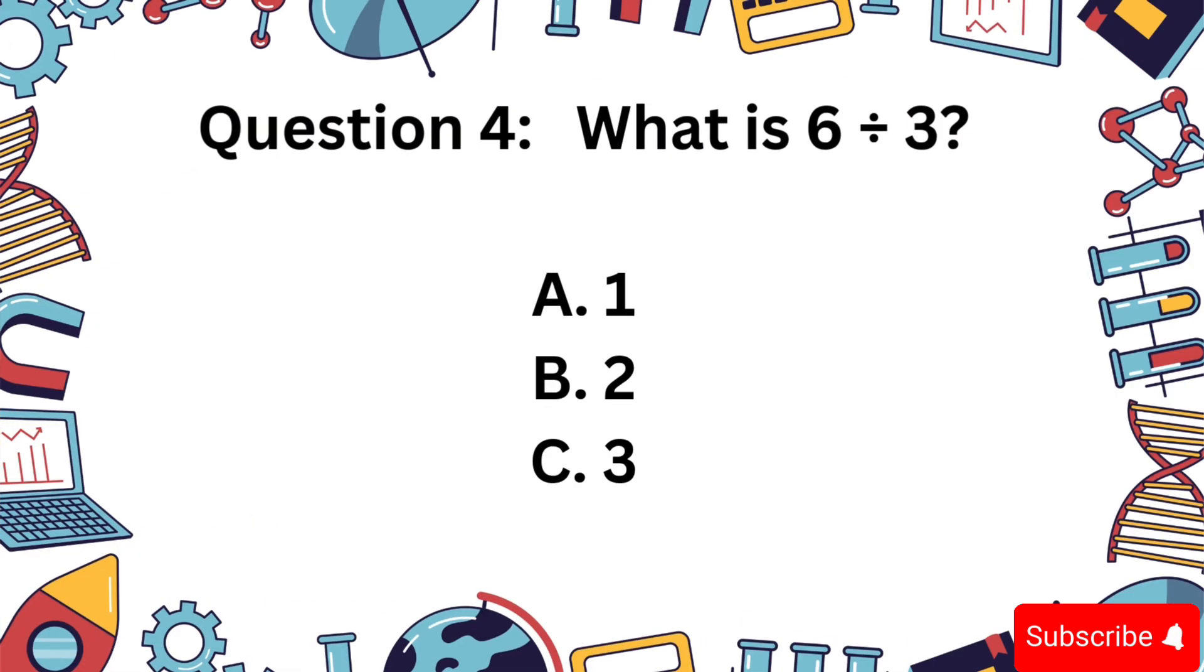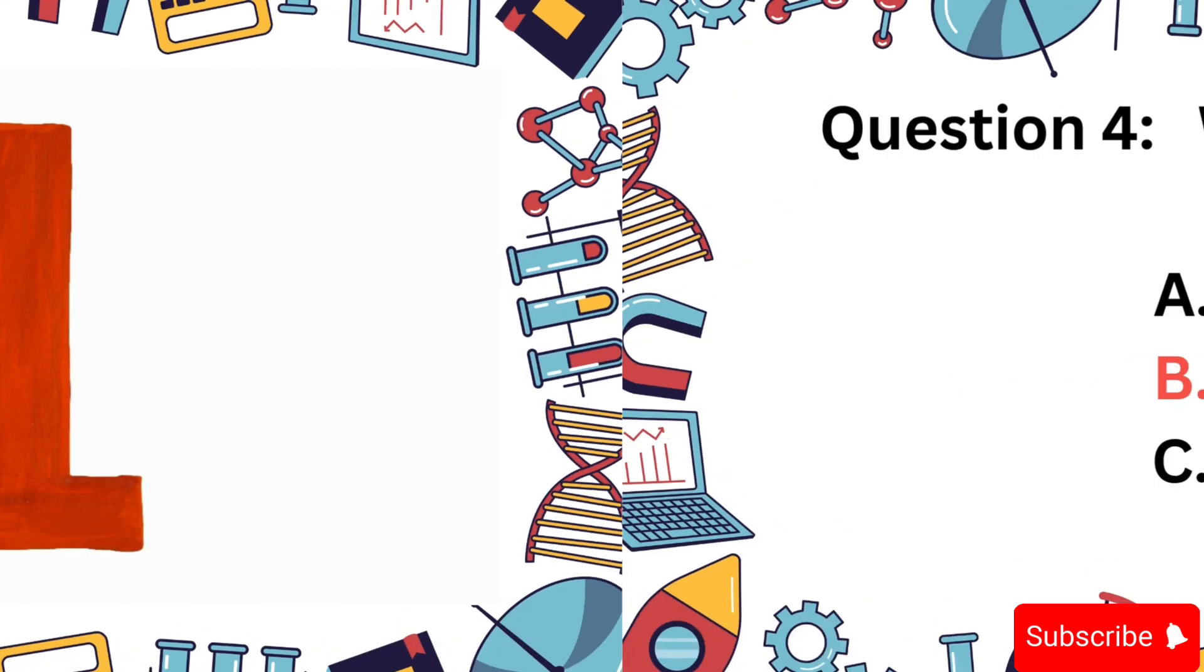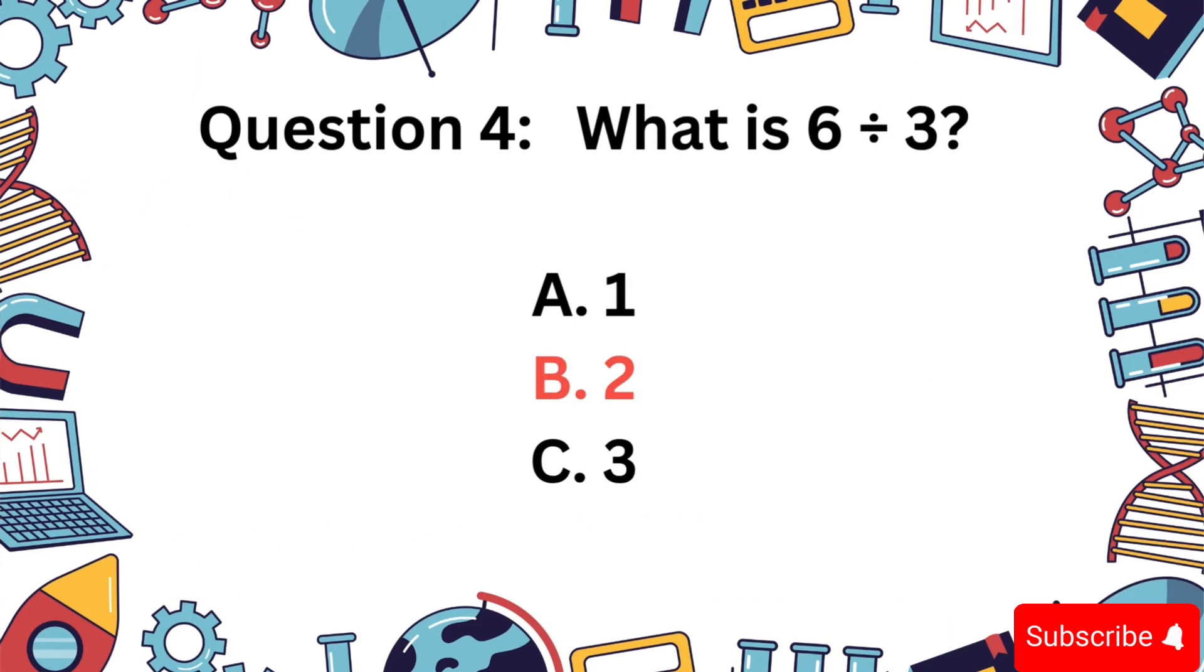Question 4. What is 6 divided by 3? A, 1, B, 2, or C, 3? The answer is B, 2.